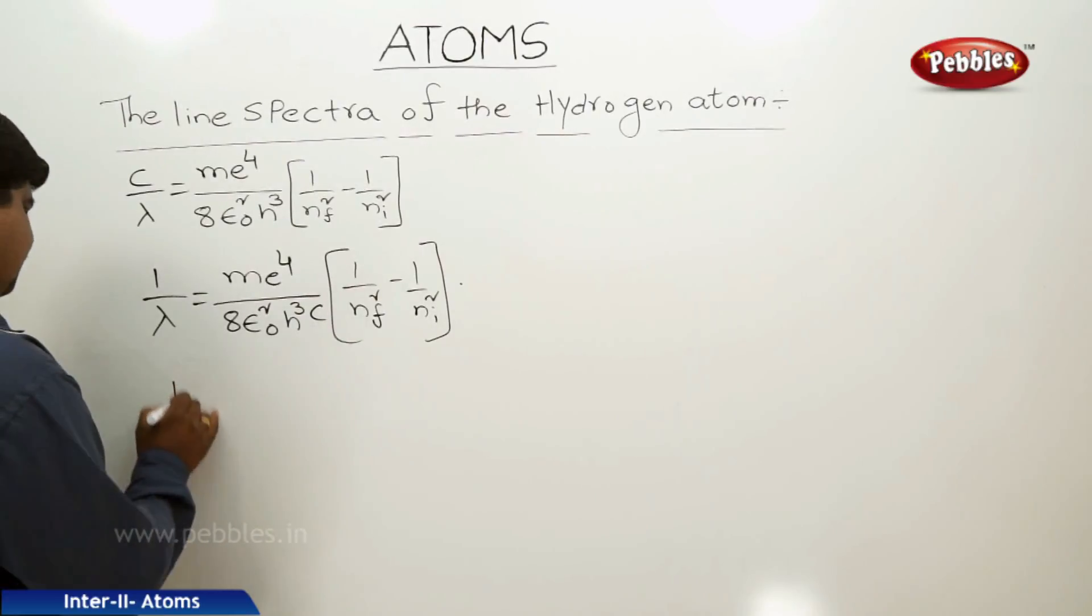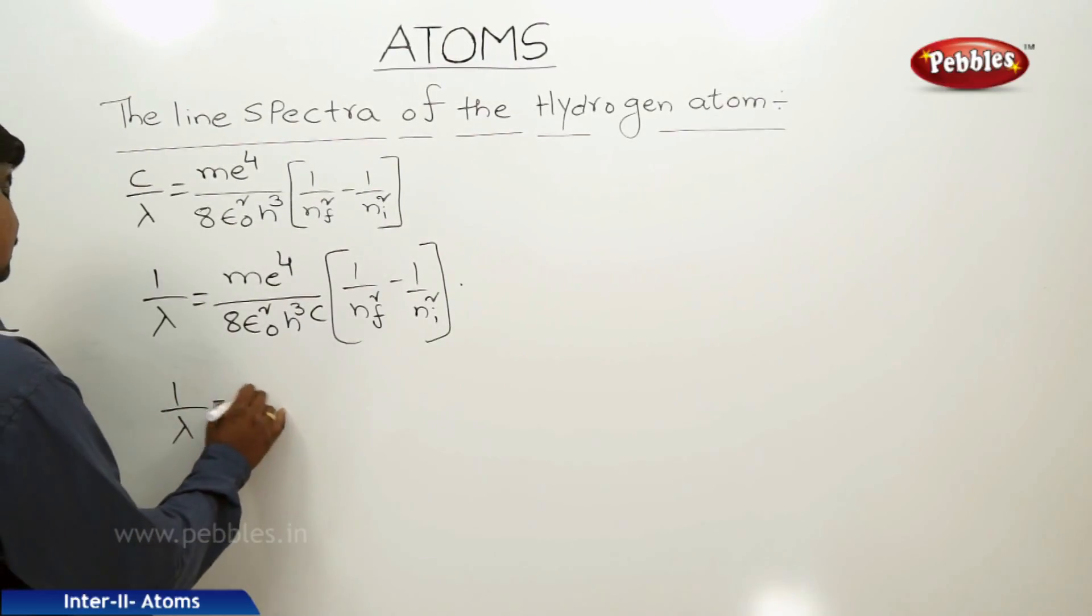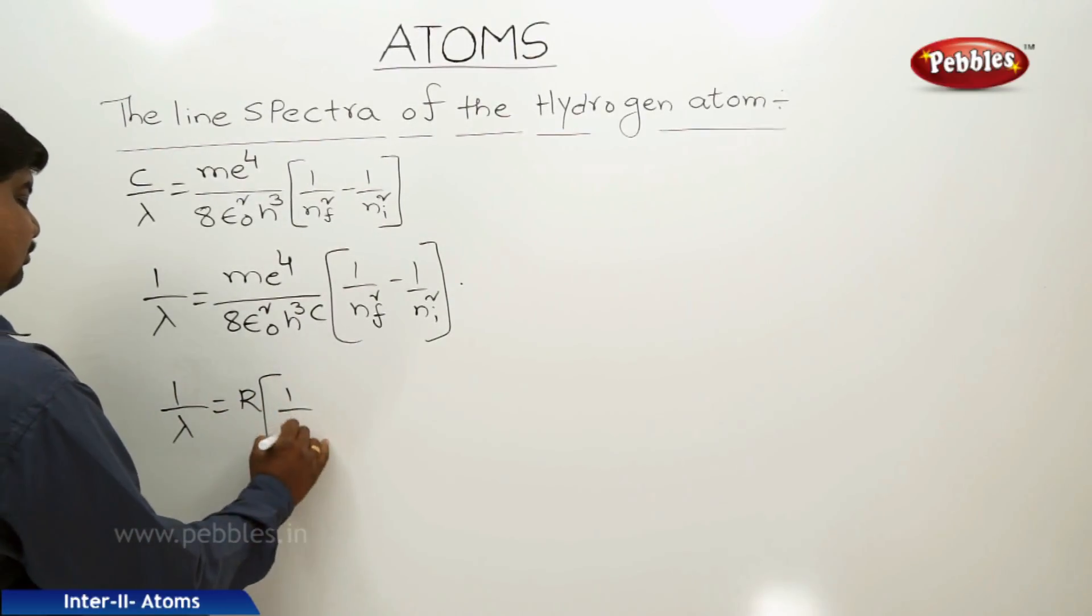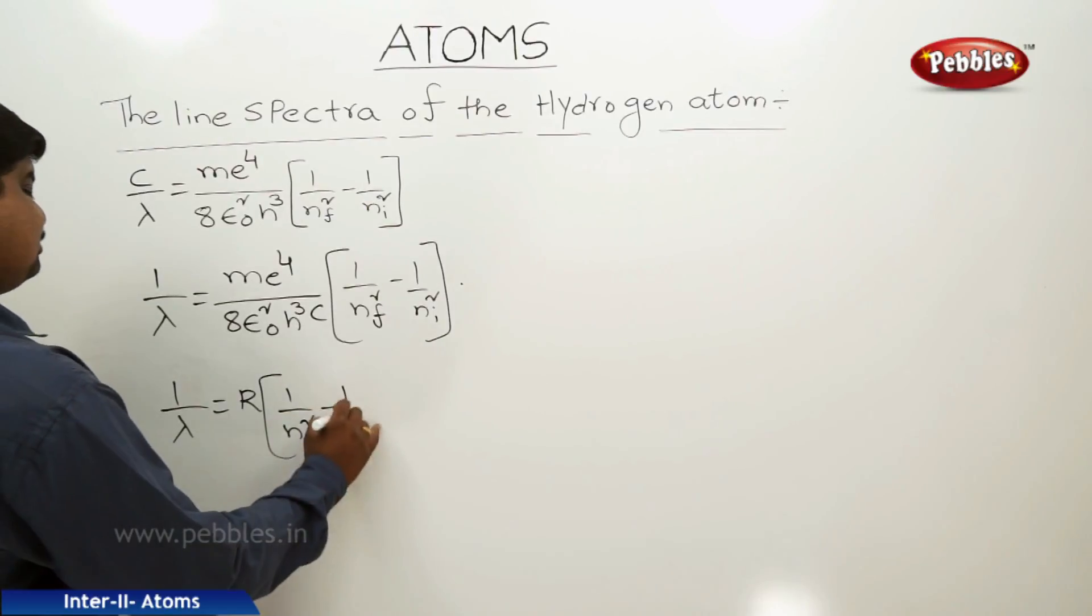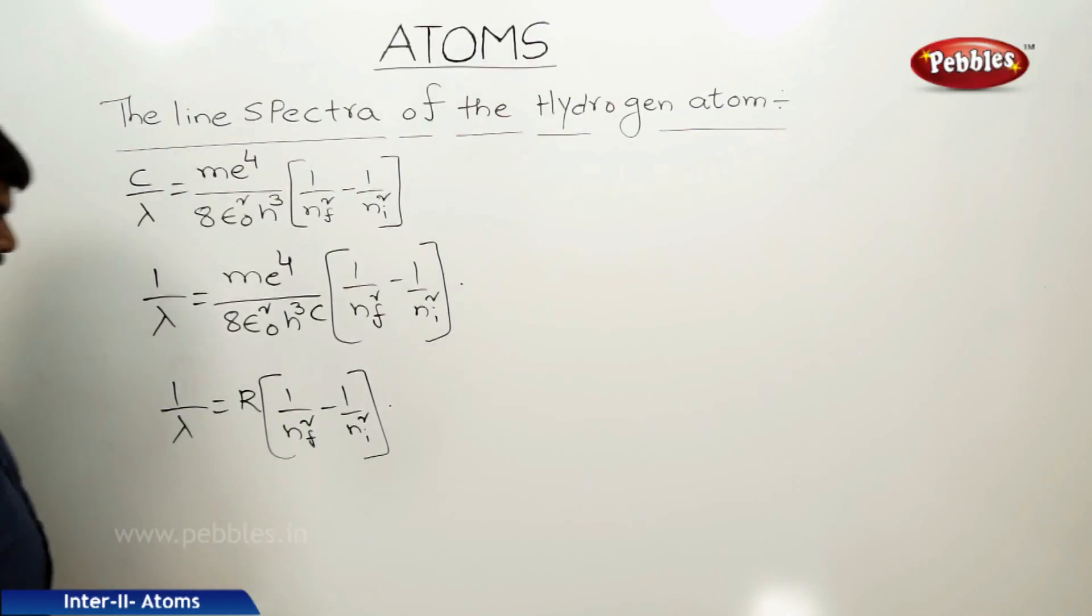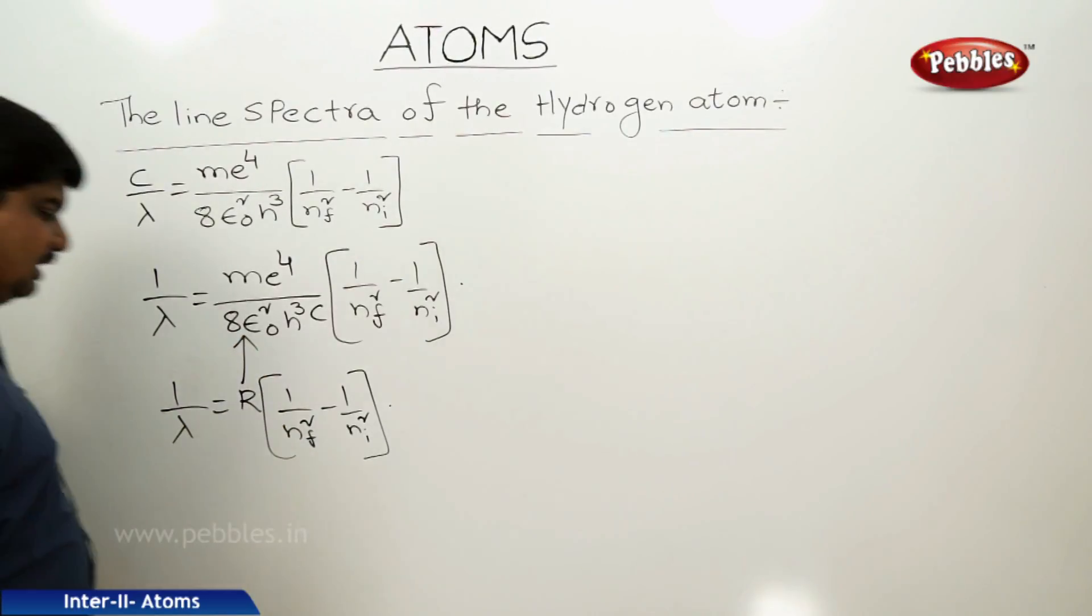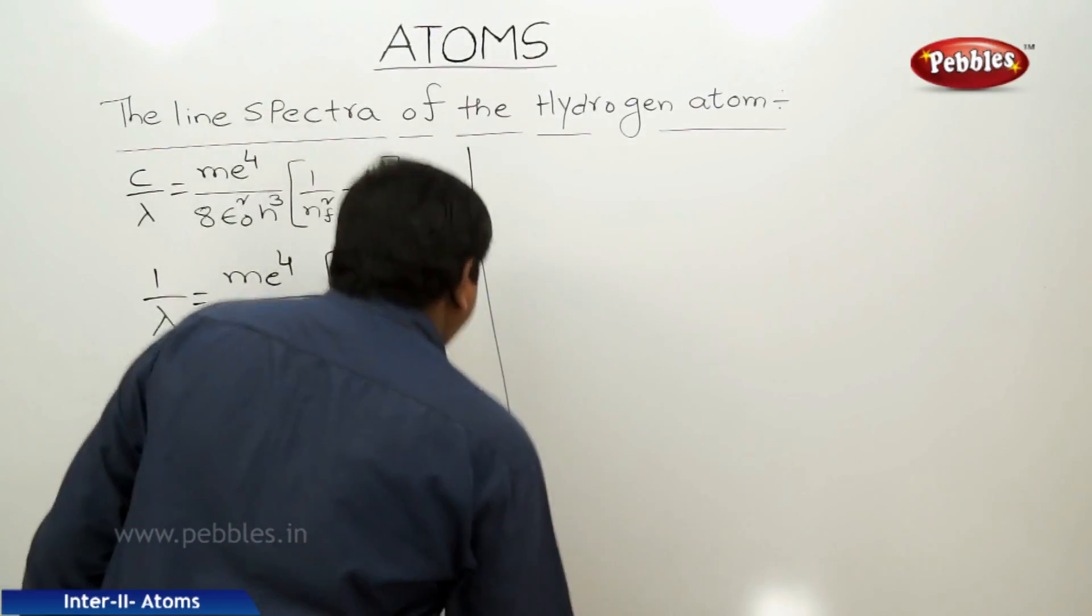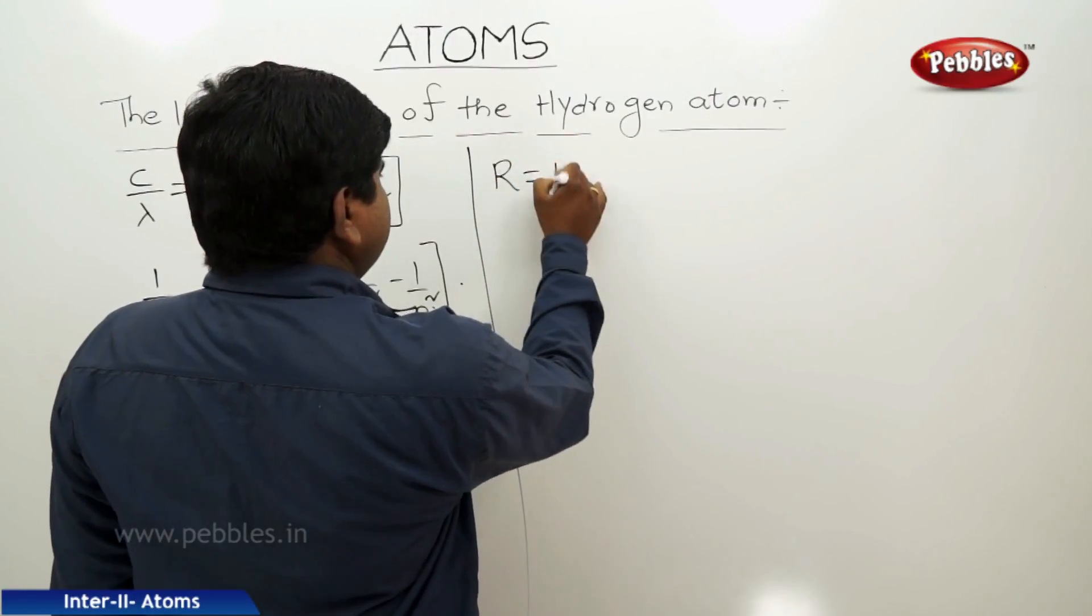This equation is comparable to 1 by lambda equals R into 1 by nf squared minus 1 by ni squared. By comparing these two equations,